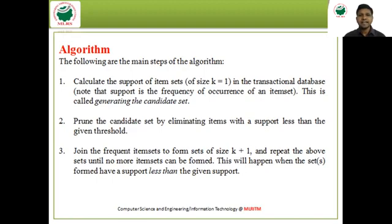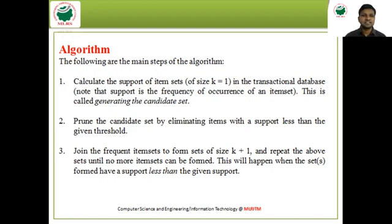Second, prune the candidate set by eliminating items with support less than the given threshold. For example, if the threshold is 2, eliminate any item with support less than 2. Third, join the frequent item sets to form sets of size k+1 and repeat the above steps until no more item sets can be formed — that is, when the sets formed have support less than the given threshold.